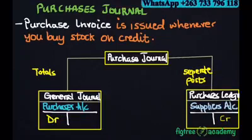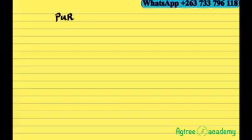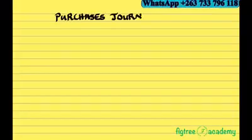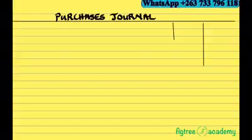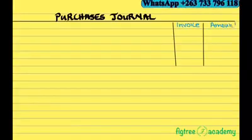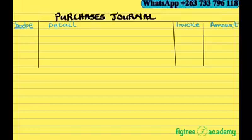This is the double entry system for the Purchases Journal. Now let's look at the structure of the Purchases Journal. We have the invoice section, the amount, date, and detail columns.